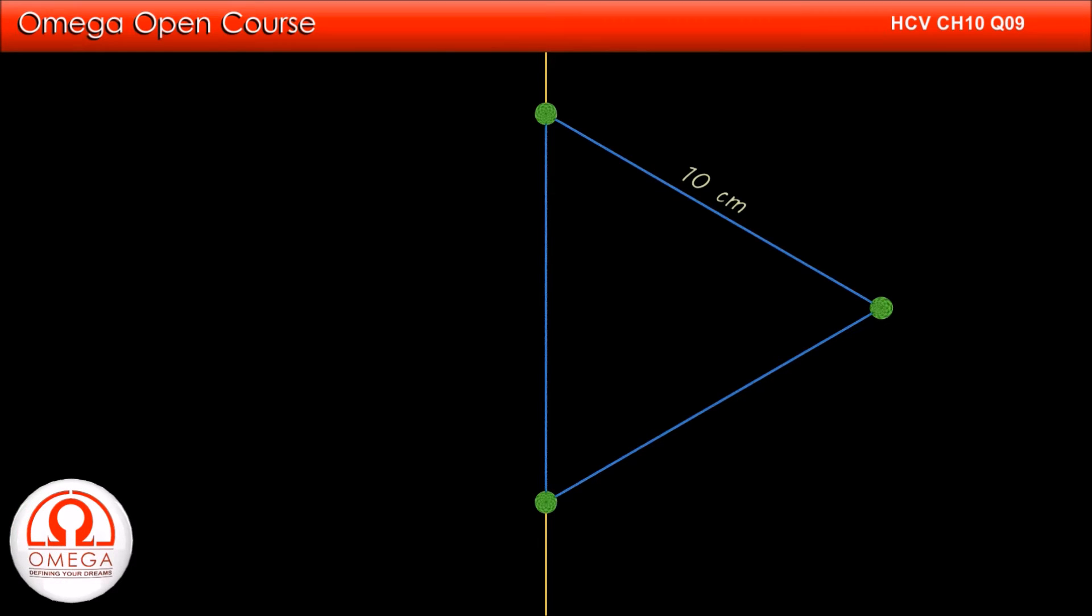Since the triangle on whose vertices the particles lie is an equilateral triangle, from trigonometry we know that its distance from the axis is 10 cos 30 degrees or 5 root 3 cm.